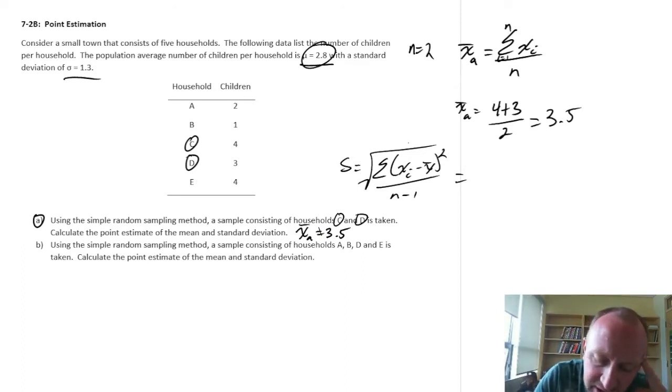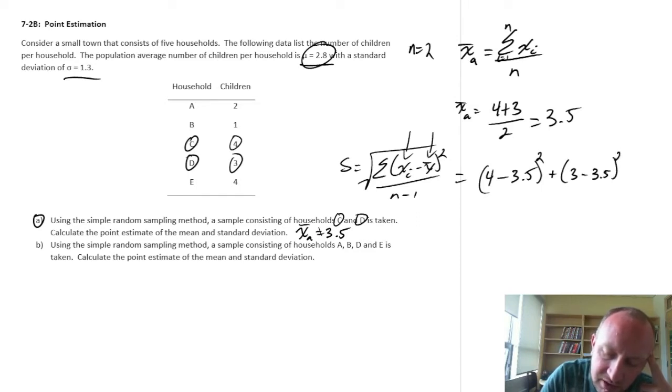So what I need to do here, I'm looking at these individual observations, so this is 4. We subtract off that mean, so 4 minus 3.5. We square that, and we do that for each of our observations. So here I only have 2, so 4's done, now the next one is plus 3, minus that point estimate of the mean squared. We then divide that by n minus 1, so we only have 2 observations, so 2 minus 1. And then we take the square root of all that.